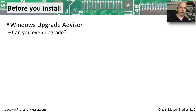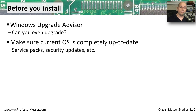Before you perform any type of upgrade, whether it's an in-place upgrade or a clean install, you want to be sure that your hardware and software are going to work properly on the new operating system. Microsoft includes on their installation media the Windows Upgrade Advisor — they may also make a version available for download from their website. This will tell you about the operating system you're using, the applications you're running, and the hardware in your system, and it will tell you if those particular pieces will work properly once you've upgraded. It's also a good best practice to make sure your system is completely up to date in its current version — run Windows Update, make sure you have all the latest service packs and security patches.